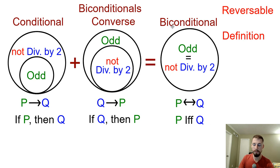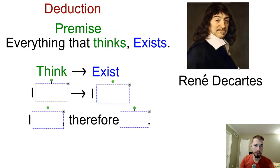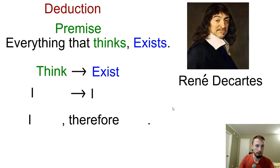When we have biconditional statements, and it's true going both directions, and it's biconditional, we say it's reversible, and it's also a definition. So we can define odd numbers as numbers that are not divisible by 2, and we can define numbers that are not divisible by 2 by odd numbers. So today we're going to talk about deduction and induction, the law of detachment and the law of syllogism.